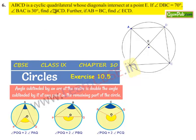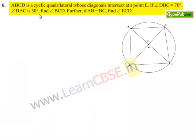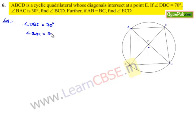Coming to the sixth question. ABCD is a cyclic quadrilateral whose diagonals intersect at point E. If angle DBC is equal to 70 degrees and angle BAC is equal to 30 degrees, find angle BCD. Further, if AB is equal to BC, find angle ECD. Let us consider cyclic quadrilateral ABCD with diagonals AC and BD intersecting at point E. Angle DBC is 70 degrees and angle BAC is 30 degrees.